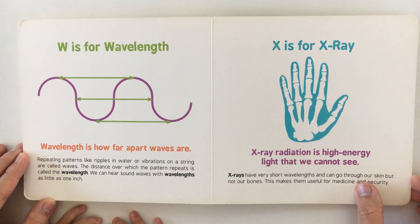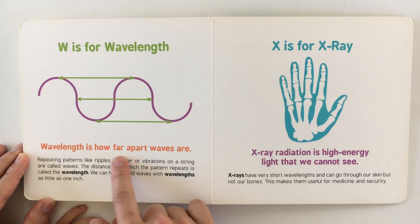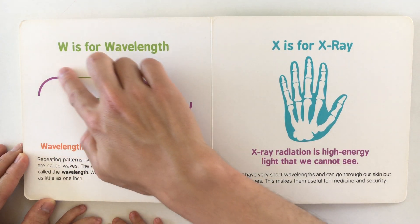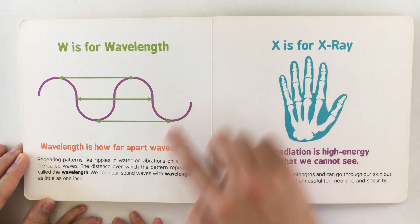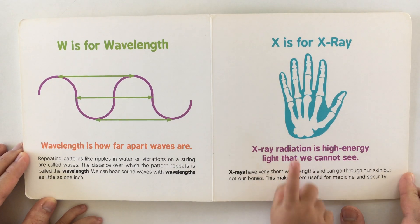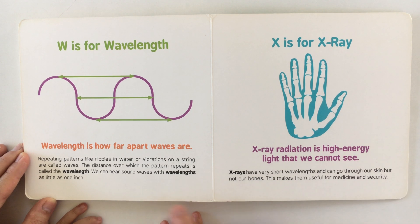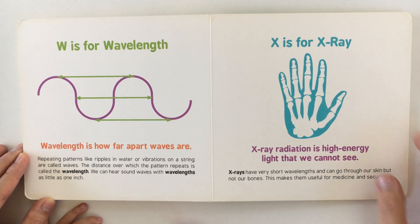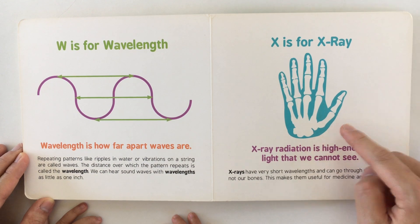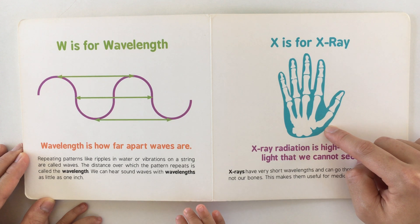W is for wavelength. Wavelength is how far apart waves are — see, there's one wave, two waves. Repeating patterns like ripples in water or vibrations on a string are called waves. The distance over which the pattern repeats is called the wavelength. We can hear sound waves with wavelengths as little as one inch.